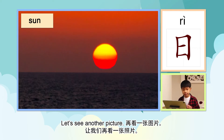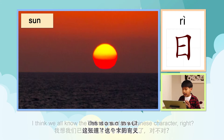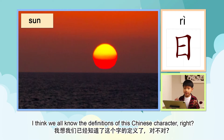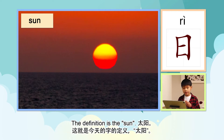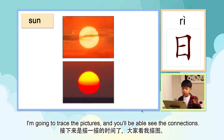再看一张图片。 This is a sun as well. I think we all know the definition of this Chinese character, right? The definition is the sun. 太阳。 I'm going to trace the pictures and you'll be able to see the connections.